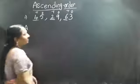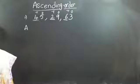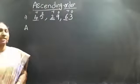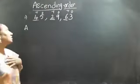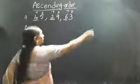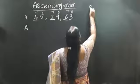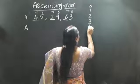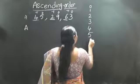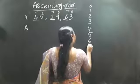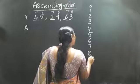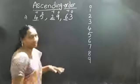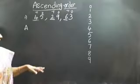Underline the three. Ascending order means from the number line — up to down. Zero, one, two, three, four, five, six, seven, eight, nine. If you want, write the number line.